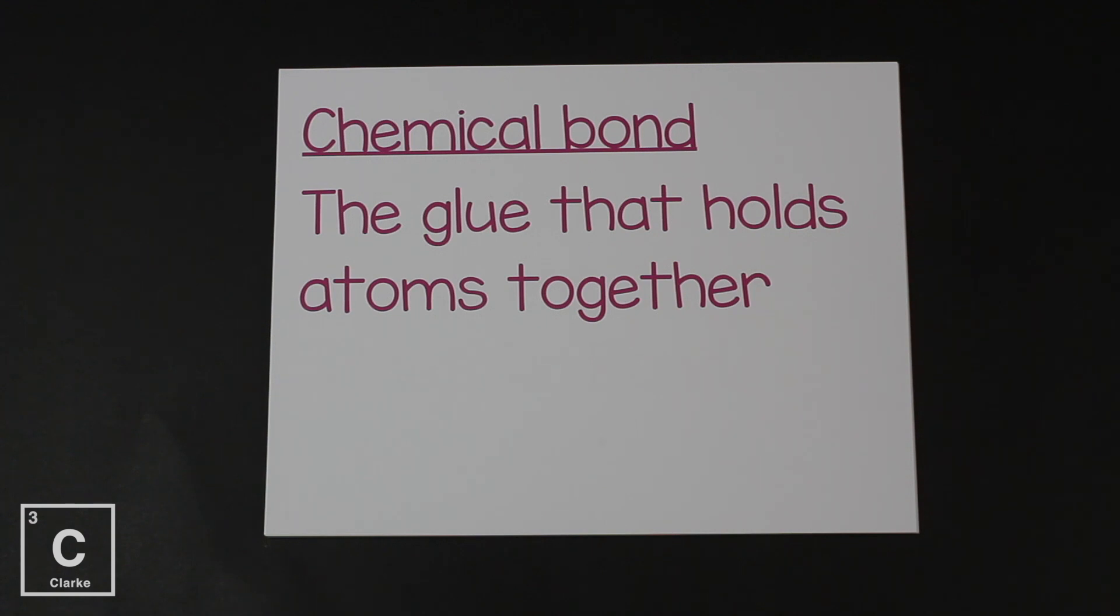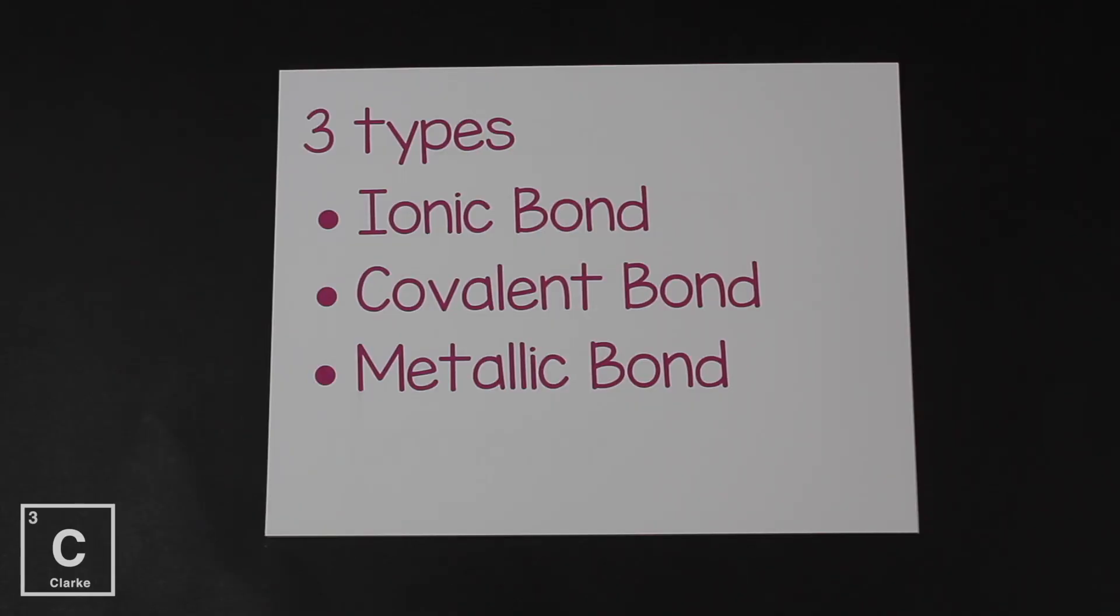Chemical bonds are just the glue that holds atoms together. Now we know that a compound is made out of two or more elements that are stuck together. That is a chemical bond, that sticky stuff that holds elements together.